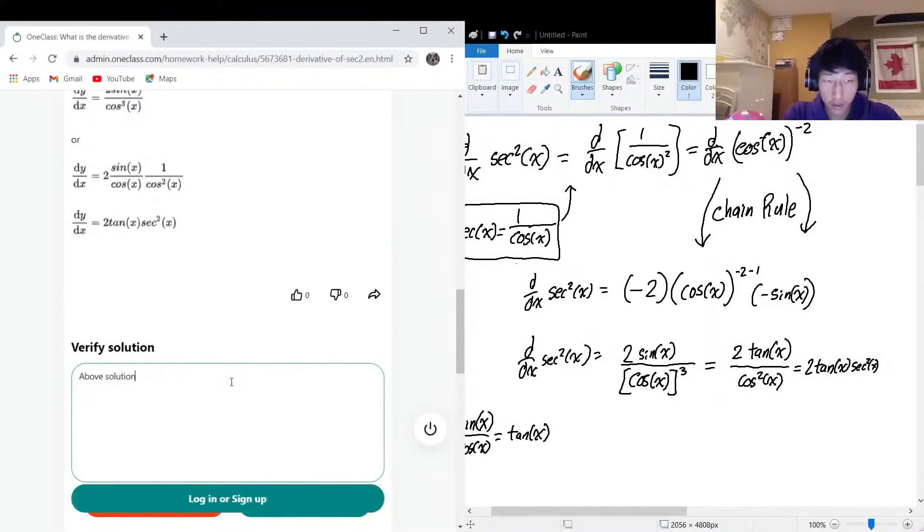The solution would be easier to convert to cos to the power of negative two and do the chain rule.